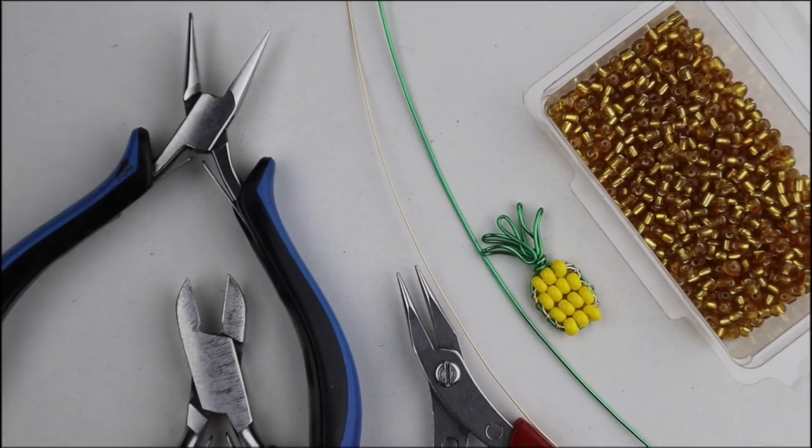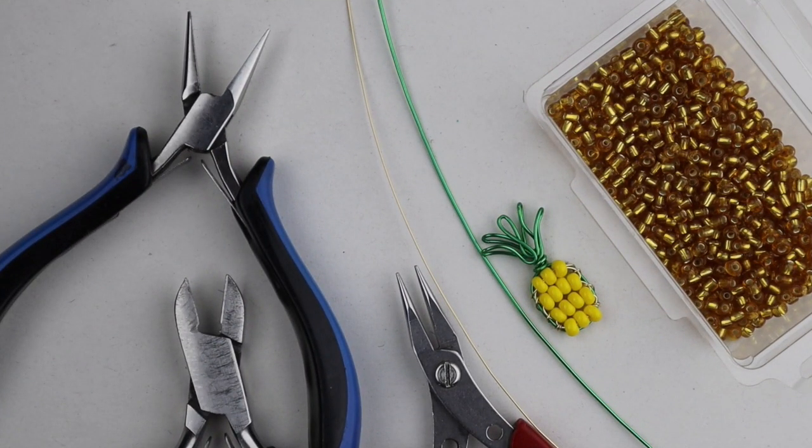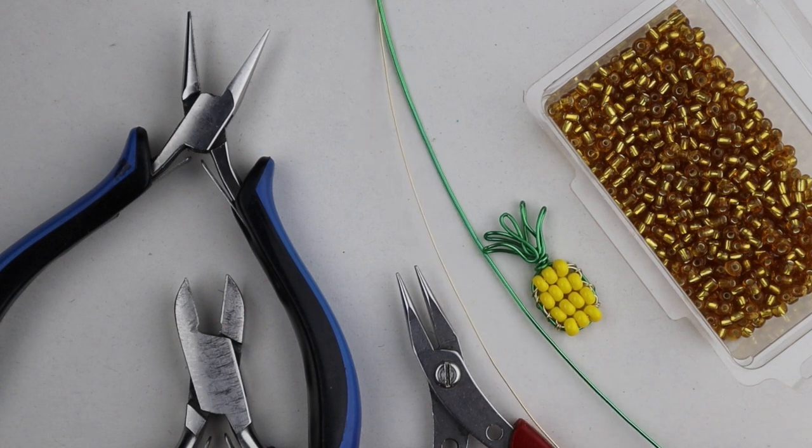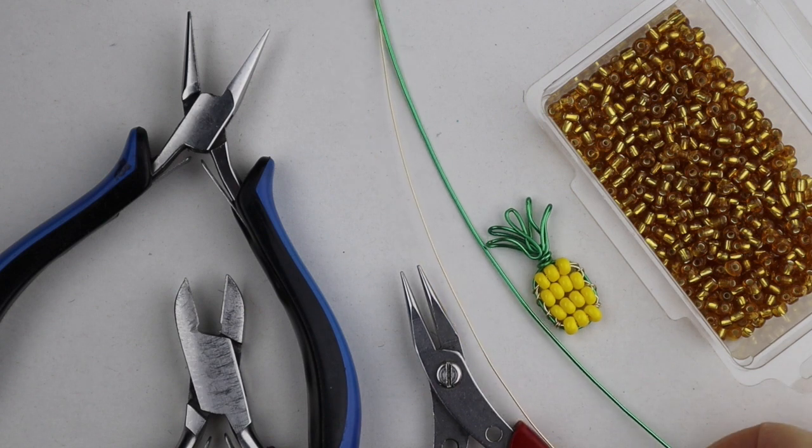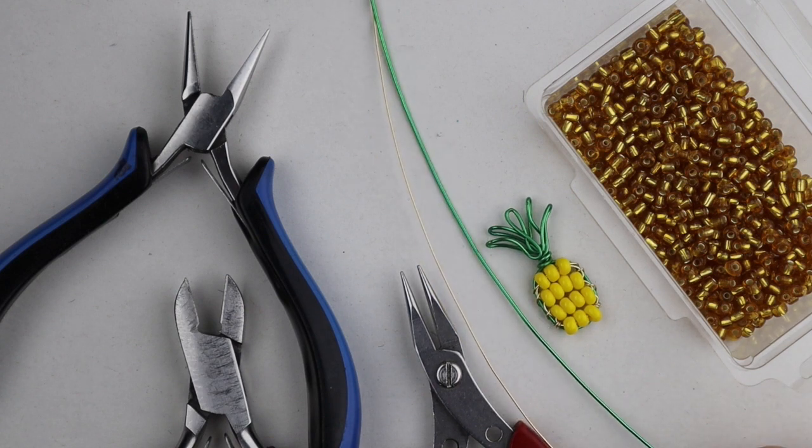What you're going to need for this project are flat pliers, cutters, round pliers, an 18 inch piece of wire that's 24 gauge, a green piece of wire that's 20 gauge, and seed beads.